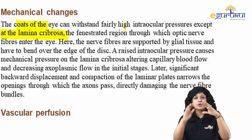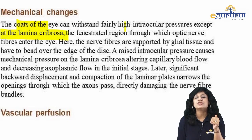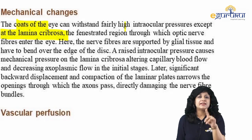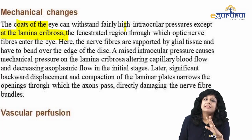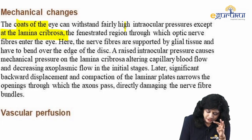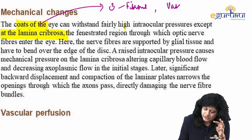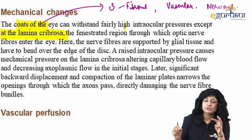There are two kinds of changes: mechanical changes and vascular changes. Because it is an adult eye, the coats of the eye are firm and able to withstand pressure. The three coats of the eye are the fibrous coat, the vascular coat, and the nervous coat. They are able to withstand pressure, but there is one weak area — the lamina cribrosa — where the sclera is fenestrated and cribriform, through which the optic nerve fibers come out.